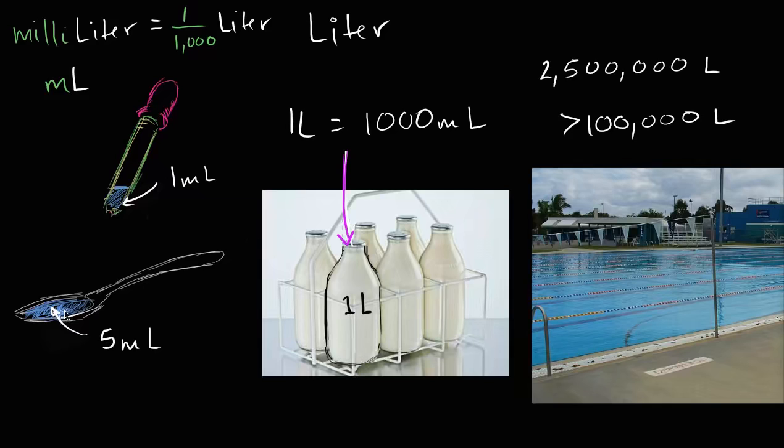So once again, when you're thinking about teaspoons or drops from a dropper, you're thinking in the milliliter range. If you're thinking about the type of something that you might drink in a day or that your family might drink over, say, a week, you're thinking in really the liter range. And if you're thinking about how much fluid it would take to fill a swimming pool, now you're talking in the tens of thousands or hundreds of thousands or even millions of liter range.